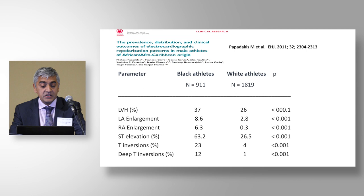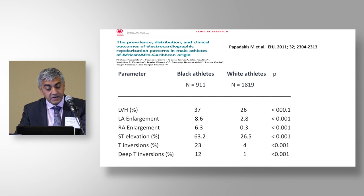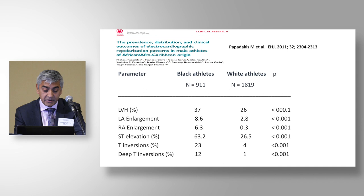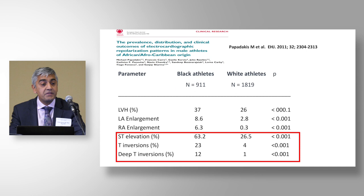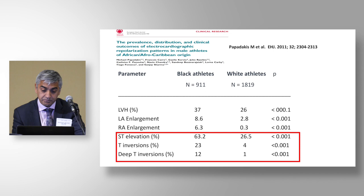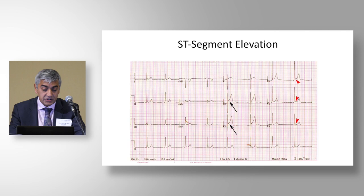Here is a dataset on 1,800 white athletes and 900 black athletes, showing black athletes have a higher prevalence of left ventricular hypertrophy, left atrial enlargement, and right atrial enlargement. They also have a three-fold increased prevalence of ST-segment elevation, a six-fold increased prevalence of T-wave inversion, and a 12-fold increase in deep T-wave inversion.